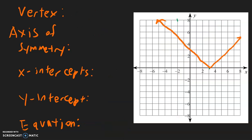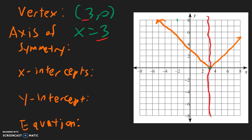For this example, the vertex is here at 3, 0. The axis of symmetry is going to be x equals 3, because the x-coordinate of the vertex is 3 — if I draw the line here, you see that it splits the graph at x equals 3. The x-intercepts: there's only one x-intercept, right over here at x equals 3. The y-intercept is at positive 3. For the equation, I'll write y equals absolute value of x minus 3, because the x-coordinate is positive 3, so it changes to negative 3 inside, and there's no plus or minus anything on the outside.